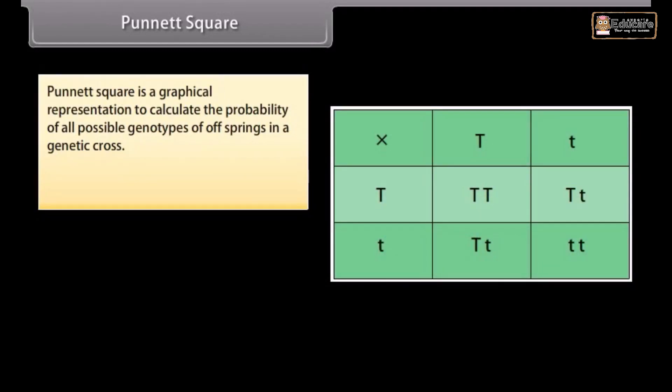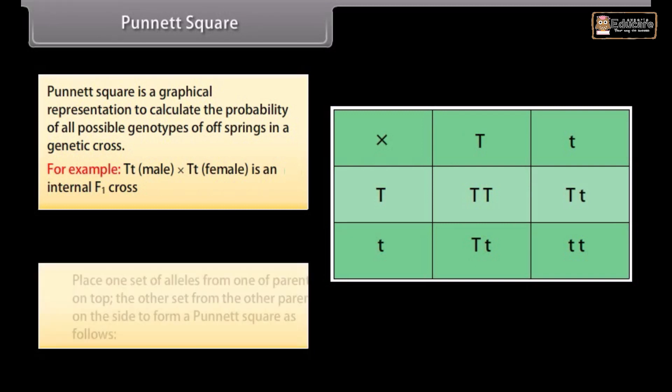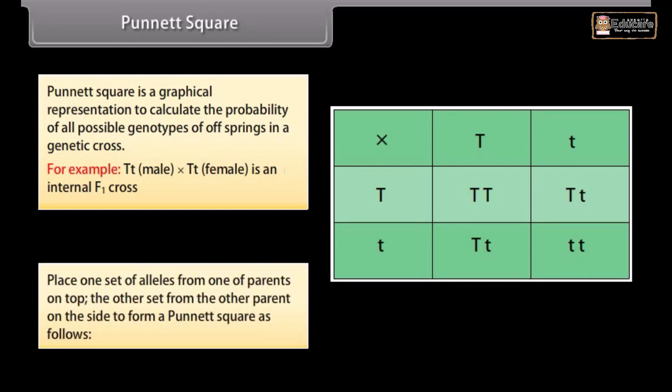Punnett square. Punnett square is a graphical representation to calculate the probability of all possible genotypes of offspring in a genetic cross. For example, Tt male cross with Tt female is an internal F1 cross. Place one set of alleles from one parent on top, the other set from the other parent on the side to form a Punnett square as follows.